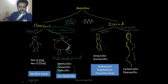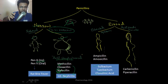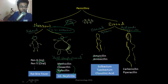For broad spectrum penicillins, the molecules are slim and thin enough to enter the small porins of gram-negative bacteria, so they act on both gram-positive and gram-negative organisms. In extended spectrum penicillins we have ampicillin and amoxicillin.